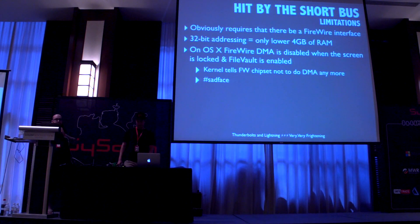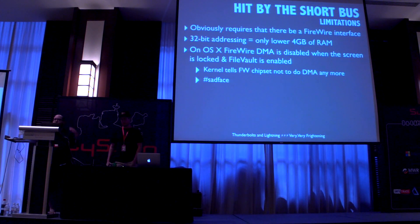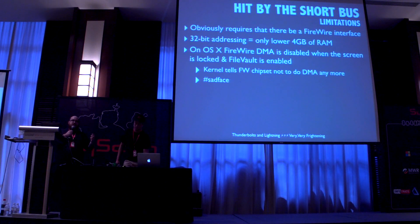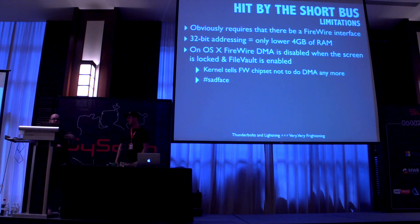There are a few limitations with Firewire DMA. First, there has to be a Firewire interface, which is kind of out of favor now. Firewire only uses 32-bit addressing, so you can only grab the lower four gigs of RAM. More importantly, on OS X — which is my main area of interest — Firewire DMA is disabled when you have FileVault turned on and you lock the screen. The Firewire driver tells the Firewire chipset not to do DMA when in secure mode. So you can't do screen unlock attacks or memory dumping on a locked machine that has FileVault turned on.